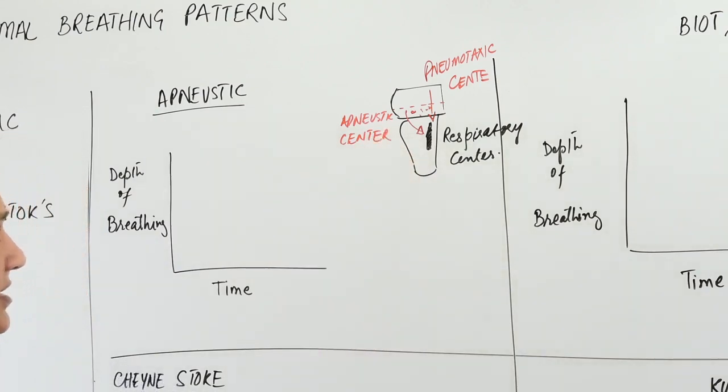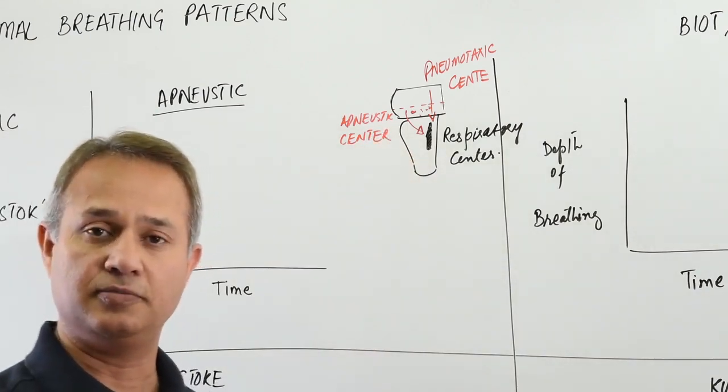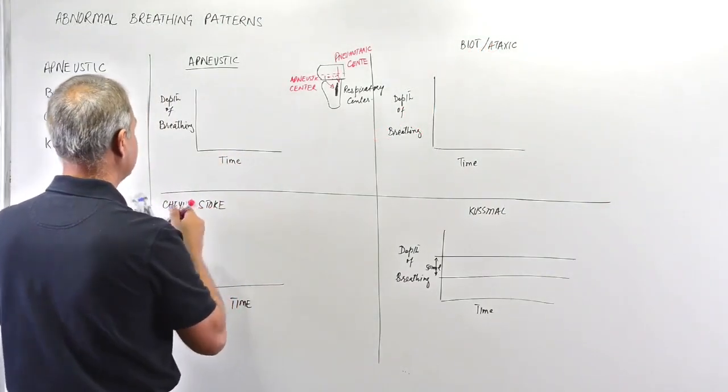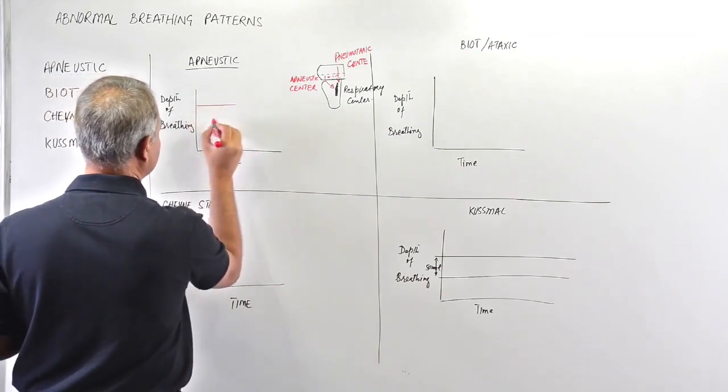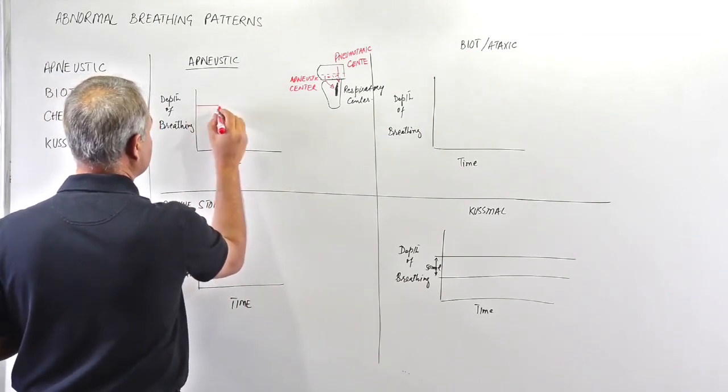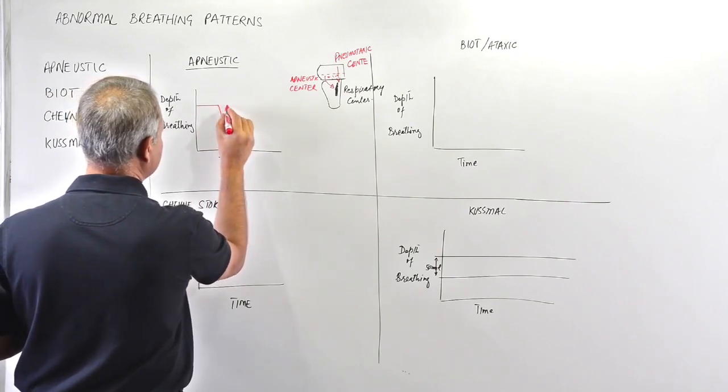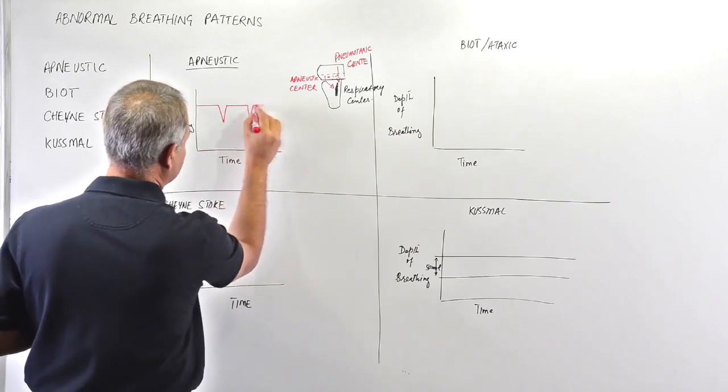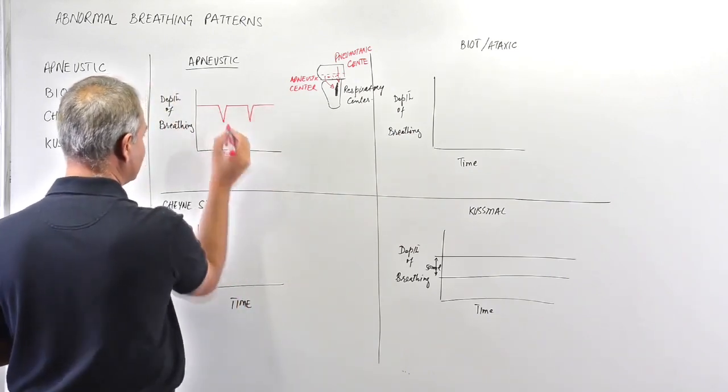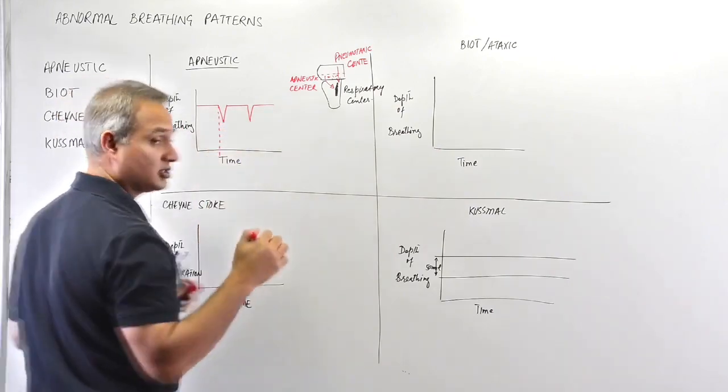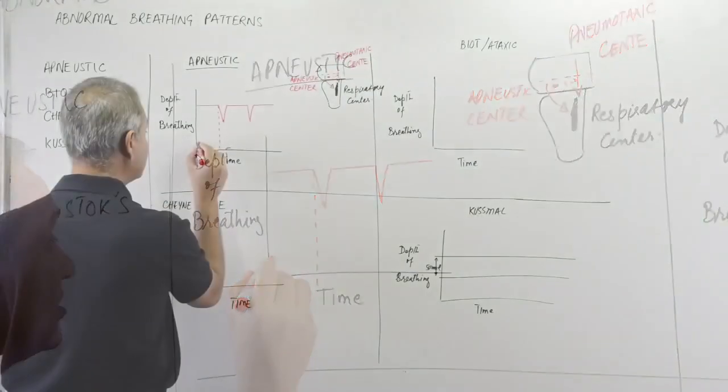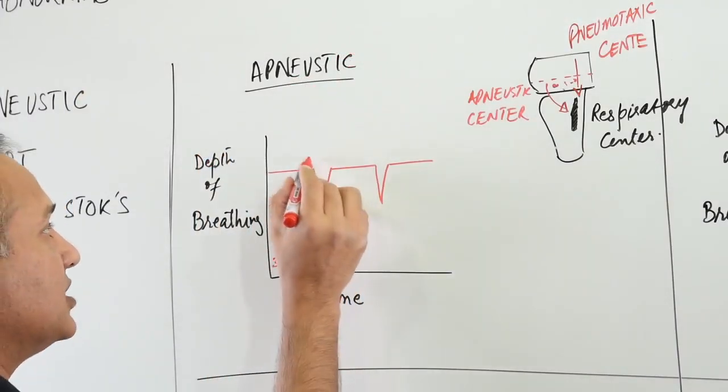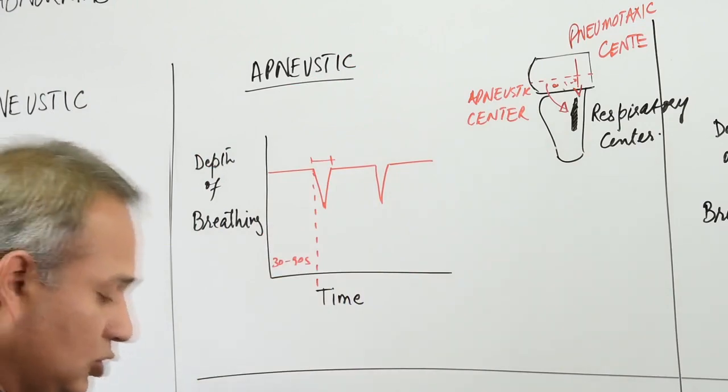Now what happens is the type of breathing you would see here is this: you would see deep inspiration, then a shallow expiration, followed by another deep inspiration - deep and prolonged - and then shallow expiration. The time taken for one inspiration can be from 30 to 90 seconds, and the expiration time is really short.